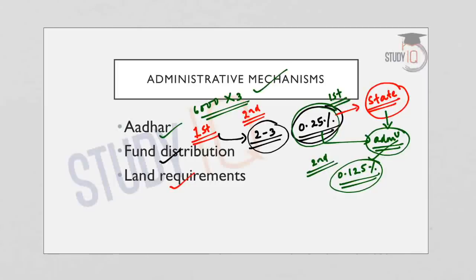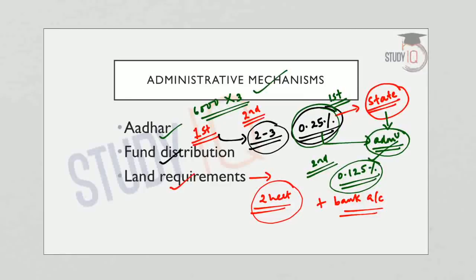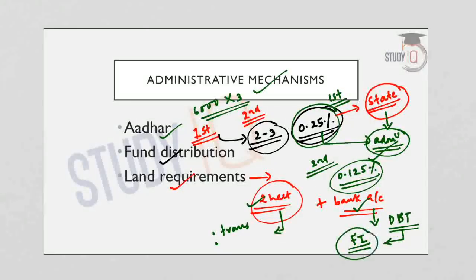The third administrative mechanism concerns land requirements. Since the condition to avail benefits is holding less than two hectares of land, a proper land record along with a functional bank account is compulsory. Proper land records improve transparency and ensure benefits go only to eligible beneficiaries. A functional bank account is necessary because funds are transferred directly to the farmer's account, also helping improve financial inclusion in rural India.